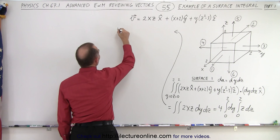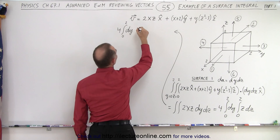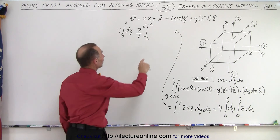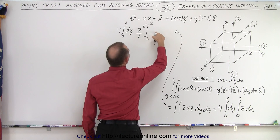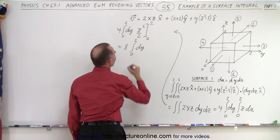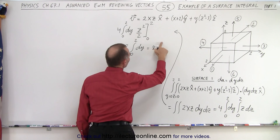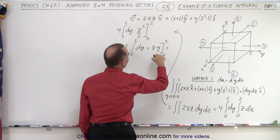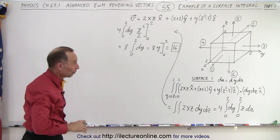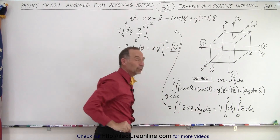When we take the integral of z, we end up with 4 times the integral over dy from 0 to 2, and integrating over z we get z squared over 2 evaluated from 0 to 2. Plugging in the lower limit gives 0; plugging in the upper limit gives 2 squared divided by 2, which is 2. So 4 times 2 gives us 8 times the integral of dy from 0 to 2. Integrating over dy gives y evaluated from 0 to 2: the lower limit gives 0, the upper limit gives 16. So when we integrate across the first surface — the front surface — the surface integral equals 16.